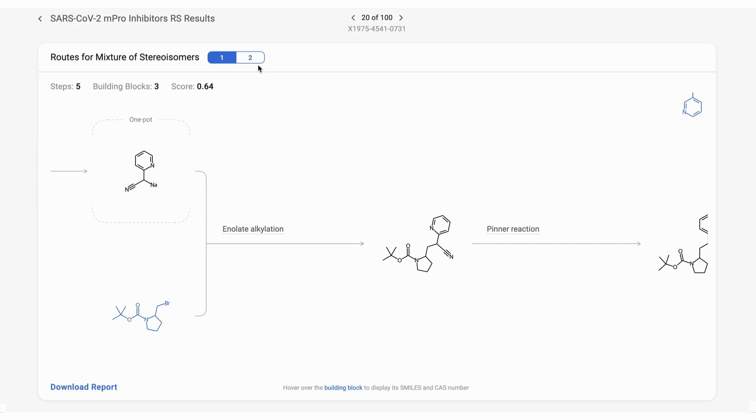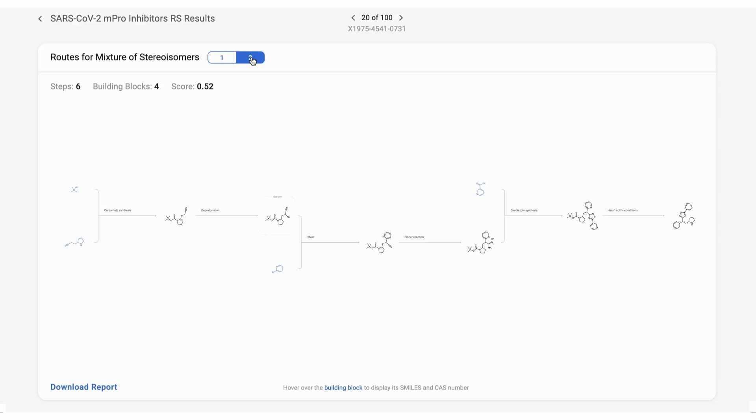The participating atoms are highlighted in blue. You can access alternative routes in the top left corner, where you can find the metrics for the displayed route. You can navigate to other compounds in the experiment by clicking the navigation arrows at the top.